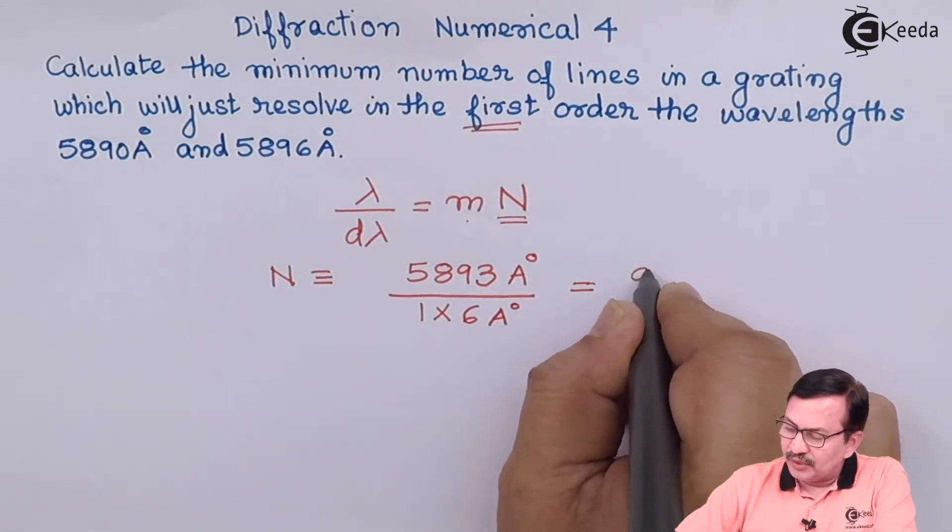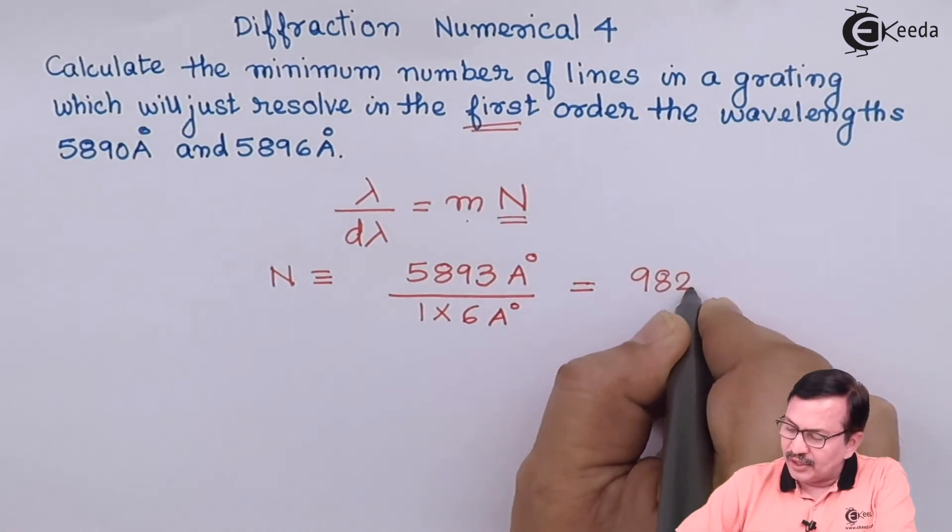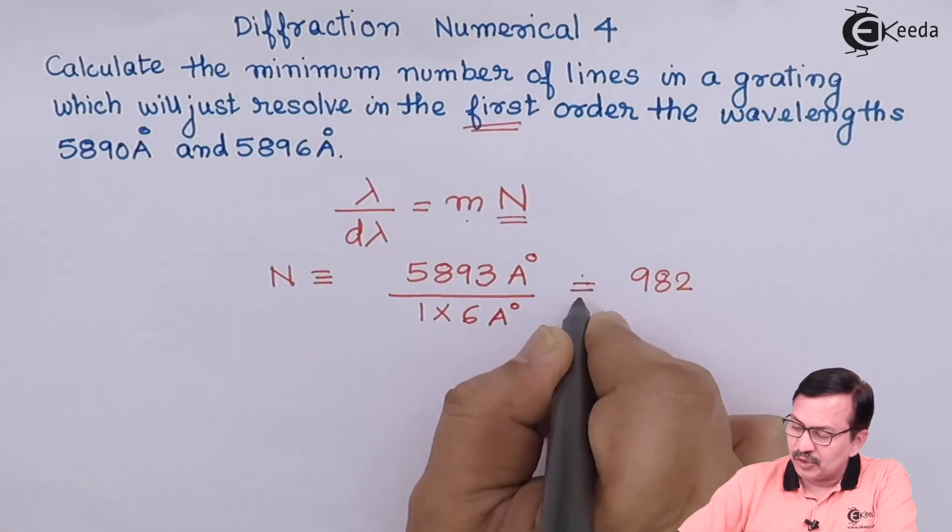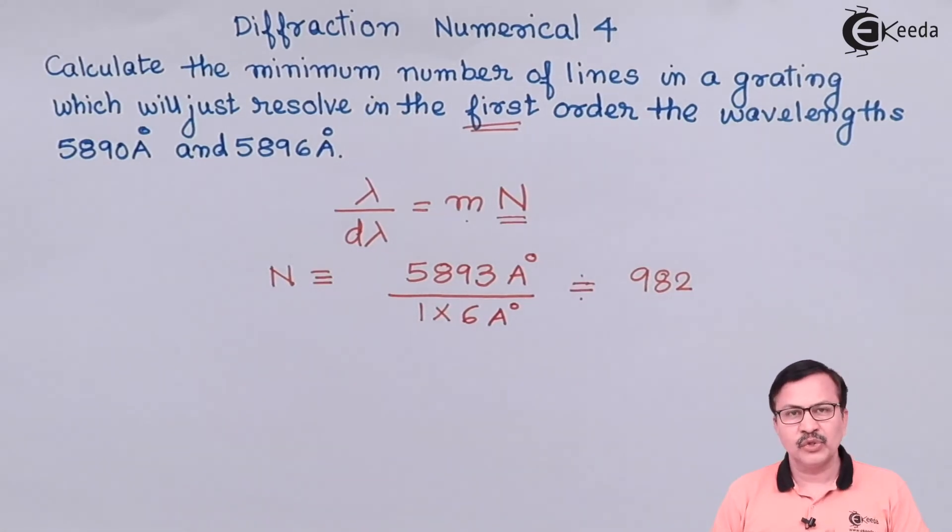This value turns out to be 982, approximately 982. This means in order to resolve the two lines 5890 and 5896 in the first order, the total number of lines that should be present on the grating is 982.